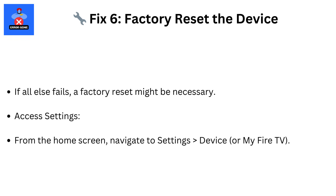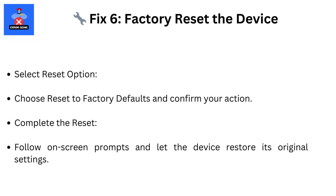Fix 6: Factory reset the device. If all else fails, a factory reset might be necessary. From the home screen, navigate to Settings, then Device or My Fire TV. Choose reset to factory defaults and confirm your action. Follow the on-screen prompts and let the device restore its original settings.